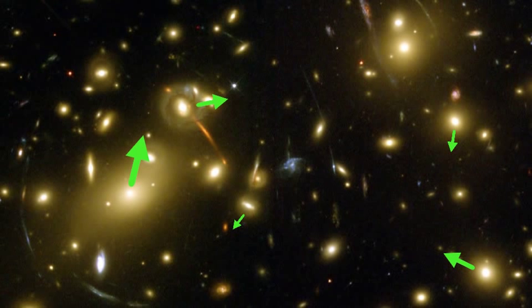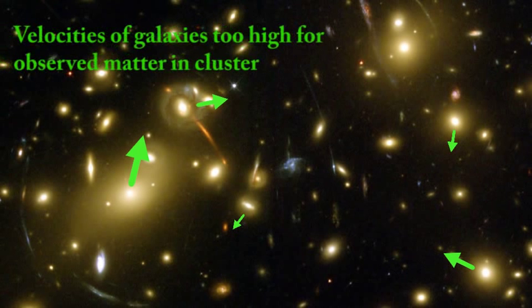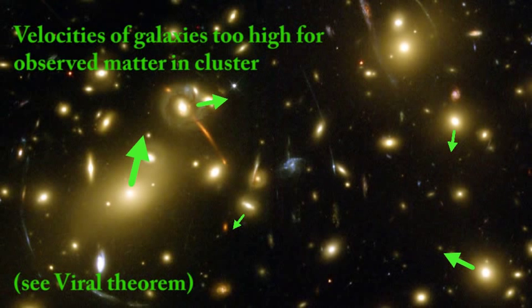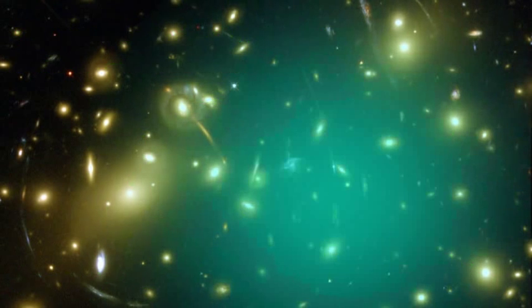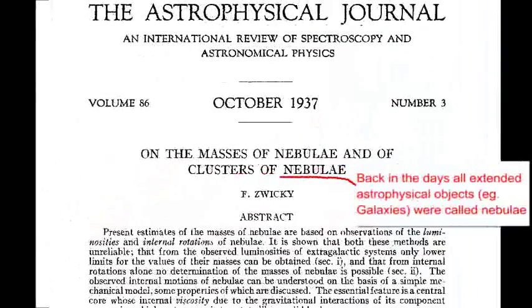We observe that there are galaxies which are moving much too fast in regards to the matter that we can see in those clusters. So again, we are led to believe that there is more matter around than we can actually observe — hence more dark matter. In fact, this is exactly the evidence Fritz Zwicky used to first postulate dark matter.